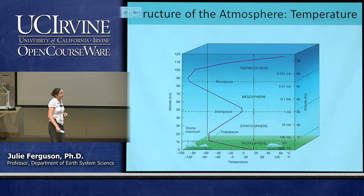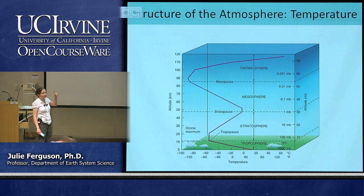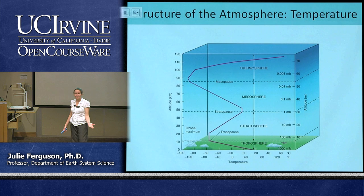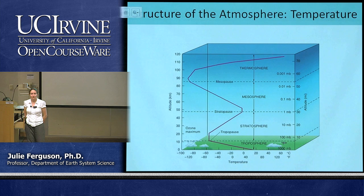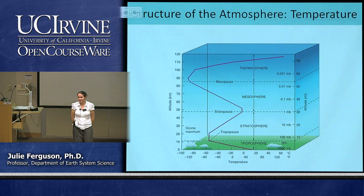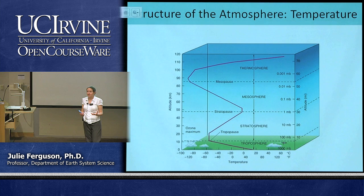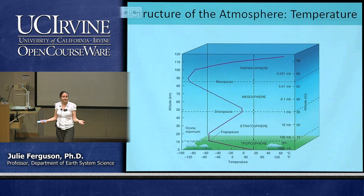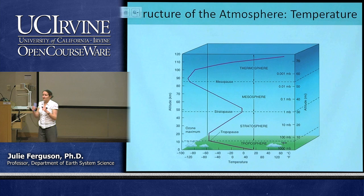But temperature decreases only to a certain point. When we hit the stratosphere at maybe 10 to 15 kilometers up, the temperature actually starts increasing again. Why would that happen? Because the stratosphere is where the ozone layer is. The ozone protects us from ultraviolet radiation by absorbing that incoming UV. If it's absorbing ultraviolet energy, it's going to heat up — that's why in our stratosphere, where a lot of our ozone is, it's absorbing energy and we actually start increasing our temperature again.